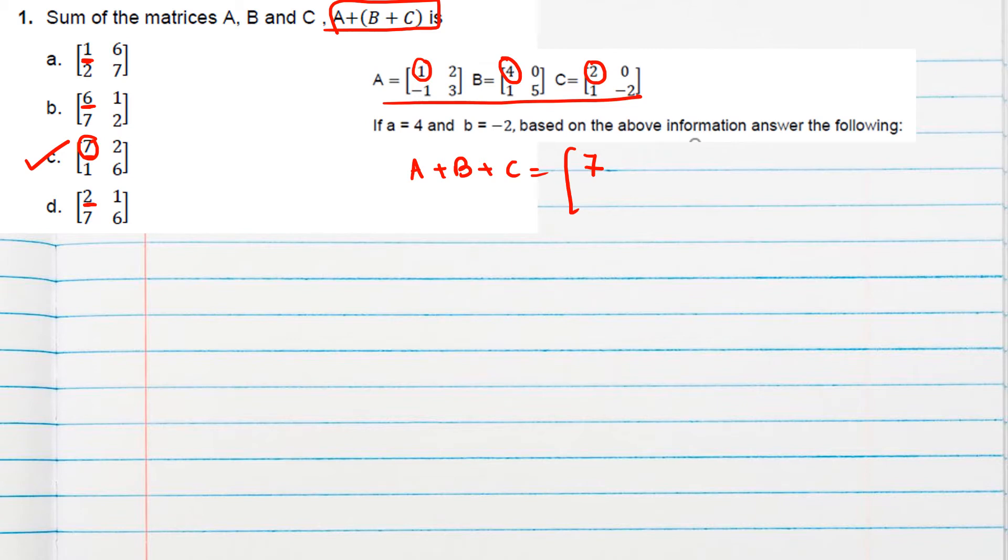Then -1+1+1=1, then 3+5=8 and so on. But after some steps, keep checking the options so that it will save your time. Directly you can get the answer.